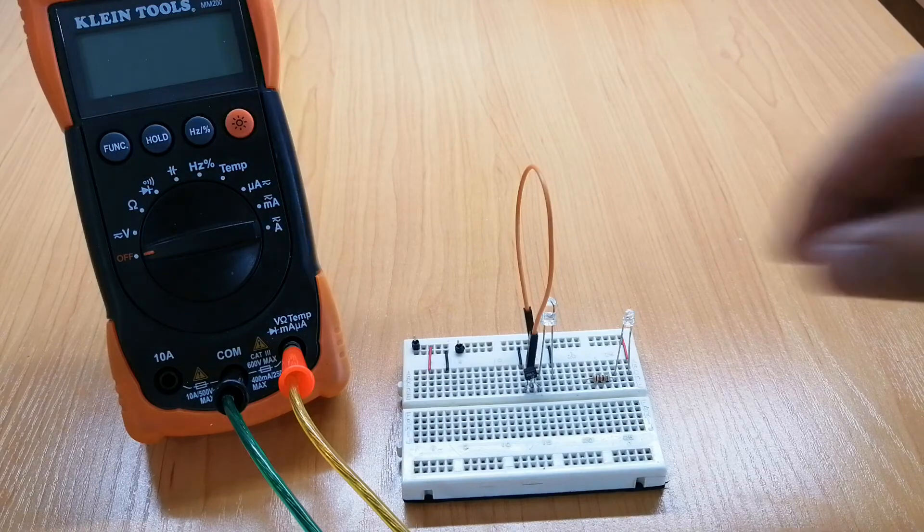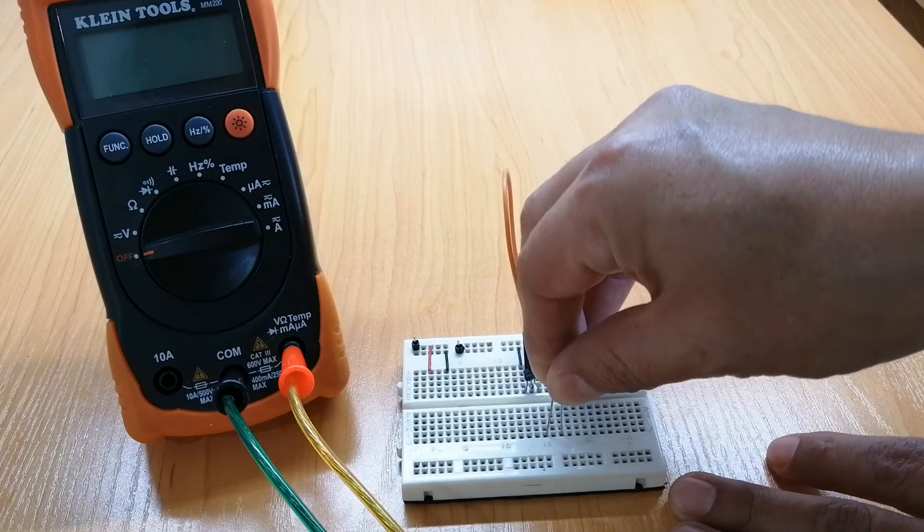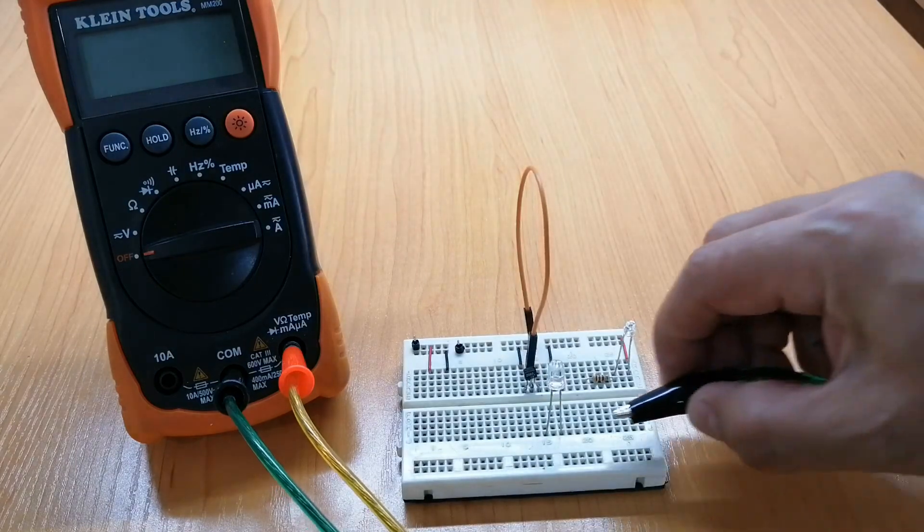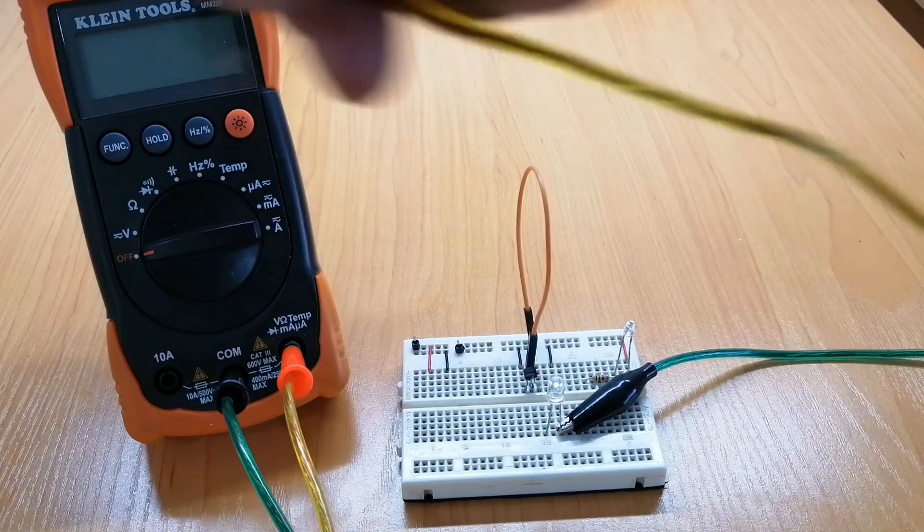But how is that a normal LED could be a sensor? Well, this is a property from LEDs to generate a small amount of current when they receive radiation, like the one they normally generate.